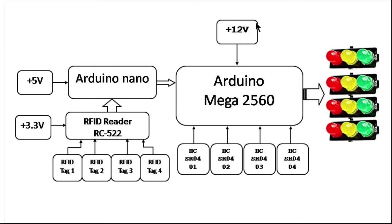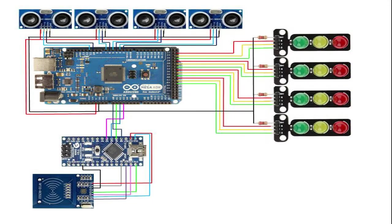A 12 volt, 5 volt, and 3.3 volt power supply is used for the Arduino Mega, Arduino Nano, and RFID reader respectively. A complete circuit diagram connection is given in the description.